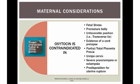It is also contraindicated if a mother has a partial or total placenta previa, an unripe cervix, severe eclampsia or preeclampsia, or if the mother has a predisposition for uterine rupture — for example, if she is nulliparous and over 35 years of age, a multigravida of four or more, or has had previous major surgery to the cervix or uterus.